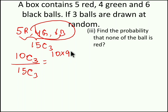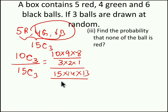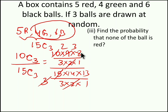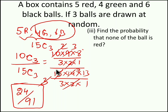So 10C3 is 10×9×8 / (3×2×1) and 15C3 is 15×14×13 / (3×2×1). The factorials cancel, and simplifying: 3×8 = 24 in the numerator and 7×13 = 91 in the denominator. So 24/91 is the probability of getting none of the balls red while taking 3 balls from 5 red, 4 green and 6 black balls. Hope you understood the concept.